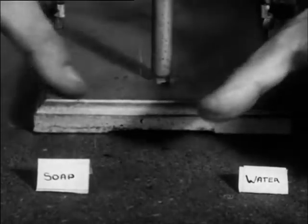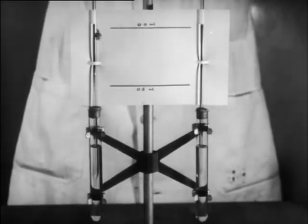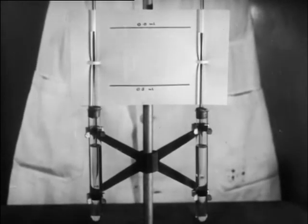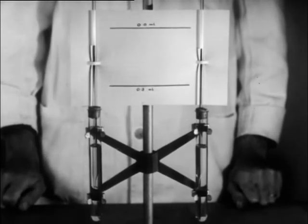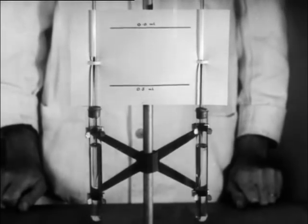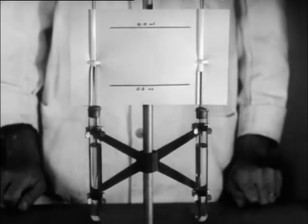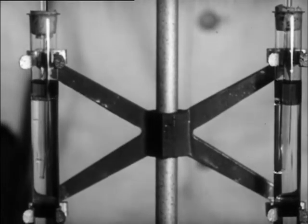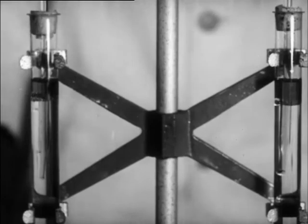To promote emulsification, that is the breaking up of one liquid into globules in another, one must reduce this interfacial tension. This is the function of the emulsifying agent and may be shown simply by the size of drops formed when oil drips from two similar tubes into water and soap solution respectively. The drops formed in the water are visibly larger than those formed in the soap solution. This is due to the effect of the soap in reducing the interfacial tension.